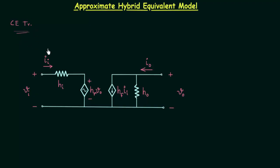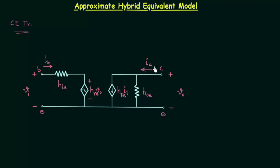We will make a few changes in this circuit. This terminal will become the base terminal, this terminal here will become the collector terminal, and these two terminals are the emitter terminal. For the common emitter configuration, hi will be written as hie, where e in the subscript represents common emitter. hr will become hre, hf will become hfe, and ho will become hoe. The input current ii is the base current ib, and the output current io is the collector current ic. Now we will perform the simplification.